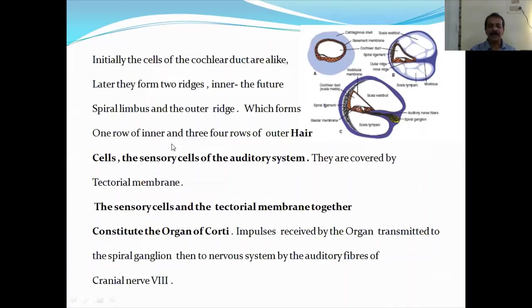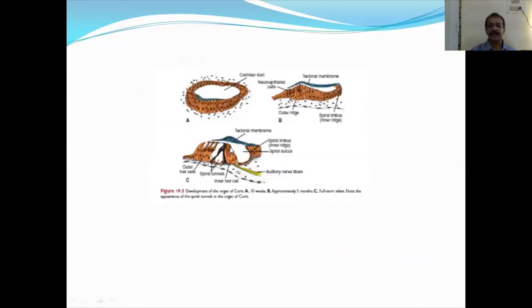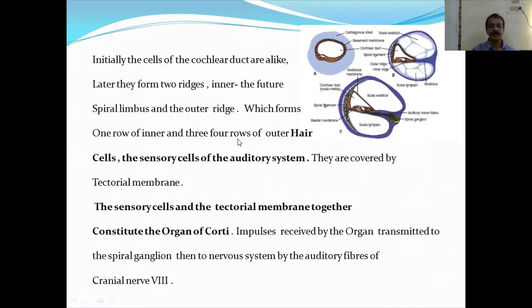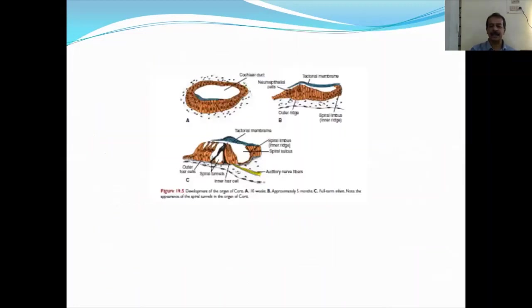The hair cells are covered by a membrane known as the tectorial membrane. The sensory cells and the tectorial membrane together constitute the organ of Corti. The impulses received by the organ of Corti are transmitted to the spiral ganglion, then to the nervous system by the auditory fibers of cranial nerve 8 — the vestibulocochlear nerve.